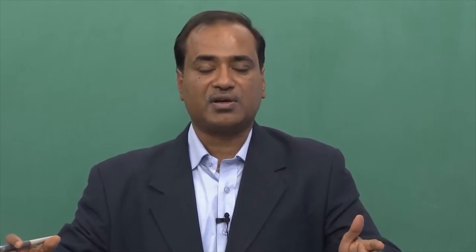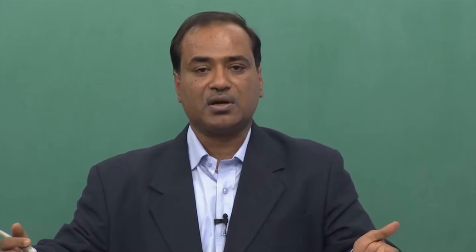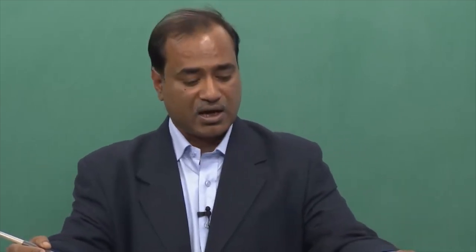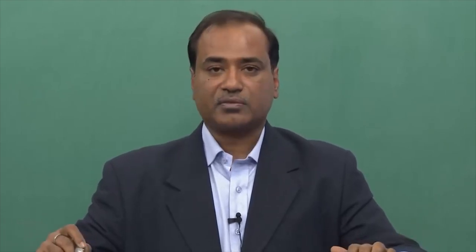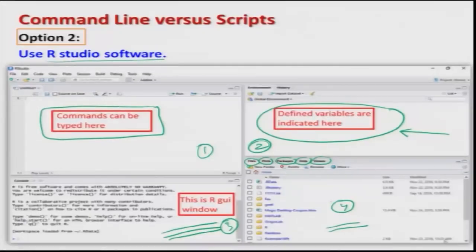These four windows give you all the important information about your program in a single shot. When working directly on R software, you may not have this convenience and may have to look up information one by one. I am not saying this information is unavailable in R — all of it is available — but working with RStudio is more easier, particularly for beginners. I am also not saying RStudio is the only software. There is another popular free software called TinnR (T-I-N-N-R) that can also be downloaded and used.